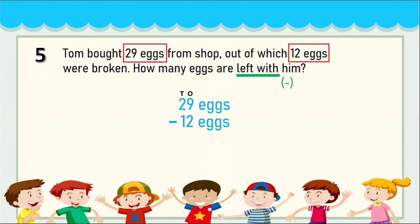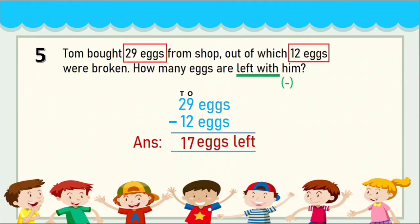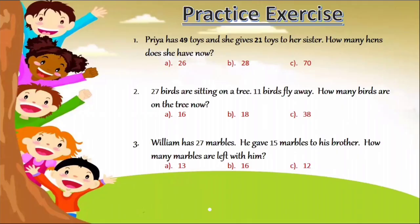Put the minus sign, then solve: subtract 2 from 9 to get 7, and subtract 1 from 2 to get 1. How many eggs are left? The answer is 17 eggs left.